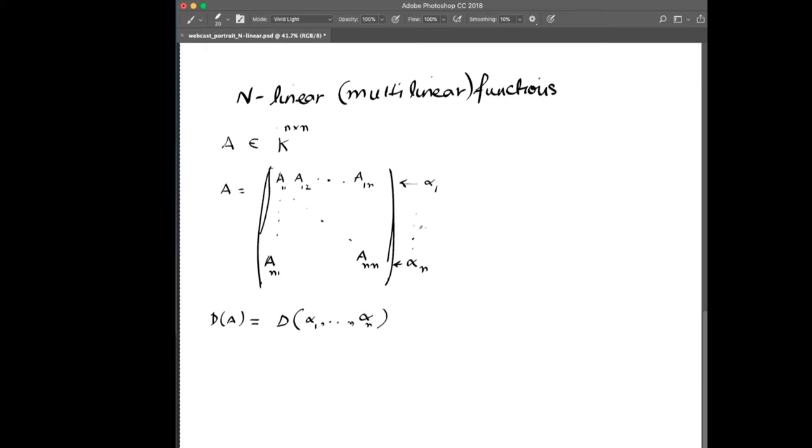The term n-linear means that if we take any ith row, alpha i, and we make the function a linear combination of this ith row, while we keep all the remaining rows fixed, then D of A can be represented as a linear combination.